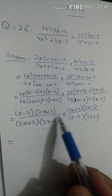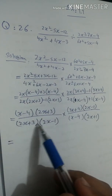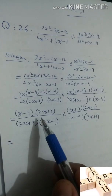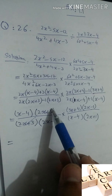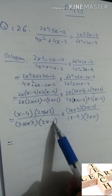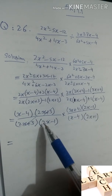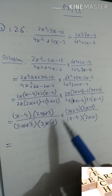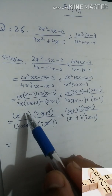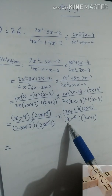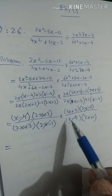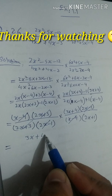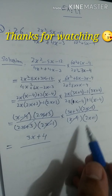Now we can see all the numerator factors multiply together and all denominator factors multiply together. We cancel (2x + 3) from numerator and denominator. We cancel (2x − 1) from numerator and denominator. We also cancel (x − 4) from numerator and denominator. What remains in the numerator is (3x + 4), and in the denominator is (2x + 1).